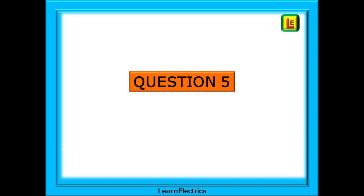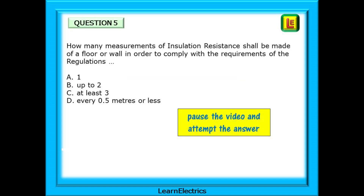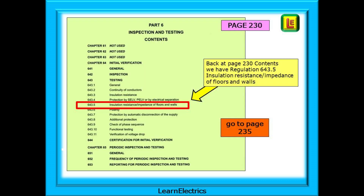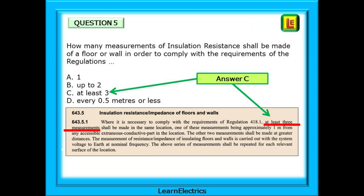Question 5: how many measurements of insulation resistance shall be made of a floor or wall in order to comply with the requirements of the regulations? Back to page 230, the contents page. There is Regulation 643.5 — Insulation Resistance and Impedance of Floors and Walls — just what the question is asking about. Go to page 235. Here is Regulation 643.5.1 and there is the answer: at least 3. Answer C.